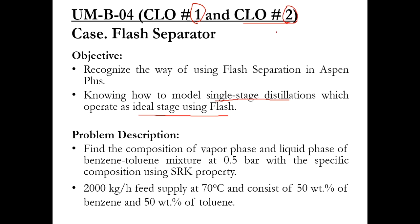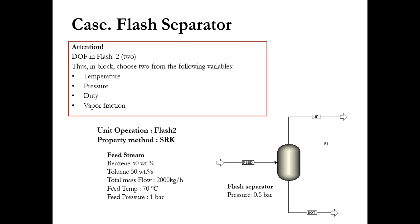The problem description is to find the composition of the vapor phase and liquid phase of a benzene-toluene mixture at 0.5 bar with specific composition using the SRK property. For SRK property, we use the steam NBS free water method. 2000 kg per hour of feed is supplied at 70 degrees centigrade, consisting of 50 weight percent benzene and 50 weight percent toluene. The feed pressure is at 1 bar and the flash separator pressure is at 0.5 bar. The degree of freedom for this flash separator is 2, meaning we must specify 2 parameters to converge the simulation.